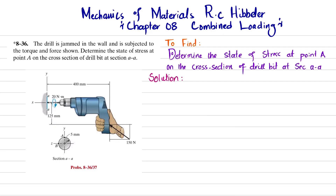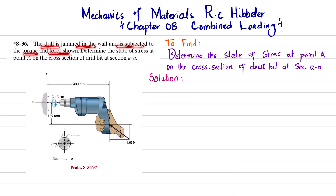Welcome back. Problem 8-36 is taken from Mechanics of Materials by R.C. Hibbeler, chapter 8: Combined Loading. The statement of the problem is: the drill is jammed in the wall and is subjected to the torque and force shown. Determine the state of stress at point A on the cross section of the drill bit at section AA.